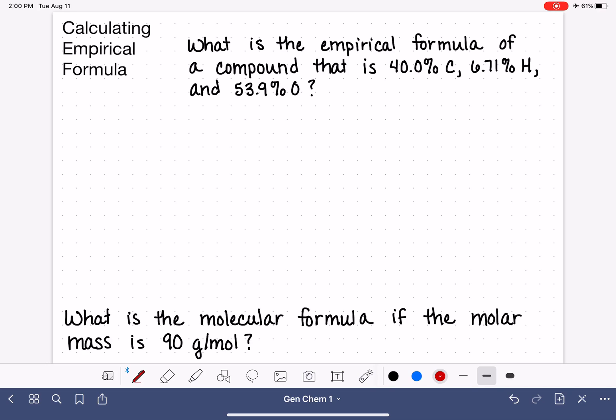What is the empirical formula of a compound that is 40.0% carbon, so that means that we have 40 grams of carbon in our imaginary sample, 6.71% hydrogen, which is 6 grams of hydrogen, and 53.9% oxygen, which is 53.9 grams of oxygen. All of these we want to convert into moles using their atomic masses.